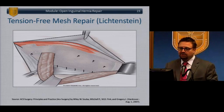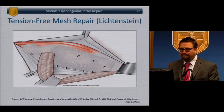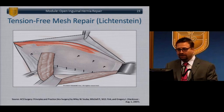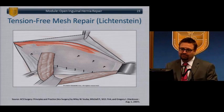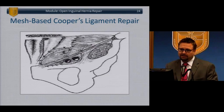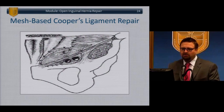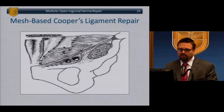Suture repairs have been largely replaced by the Lichtenstein tension-free mesh repair. Most surgeons use polypropylene mesh. You secure it medially to the pubic tubercle, suture it to the inguinal ligament, and recreate the external ring with the tails of the mesh. You can also repair using mesh anchored to Cooper's ligament, which is helpful for femoral hernia repair — you can see the femoral hernia medial to the iliacs.